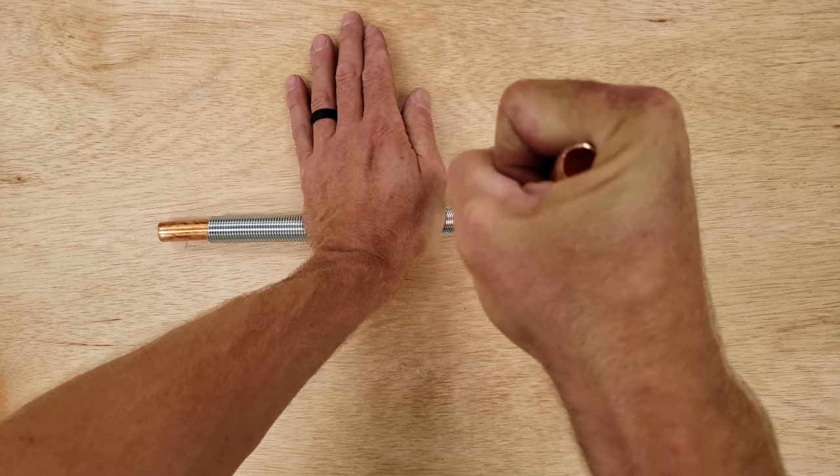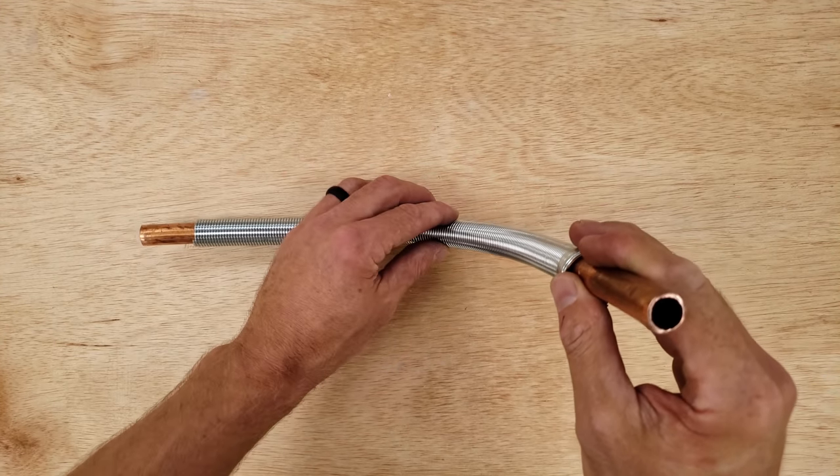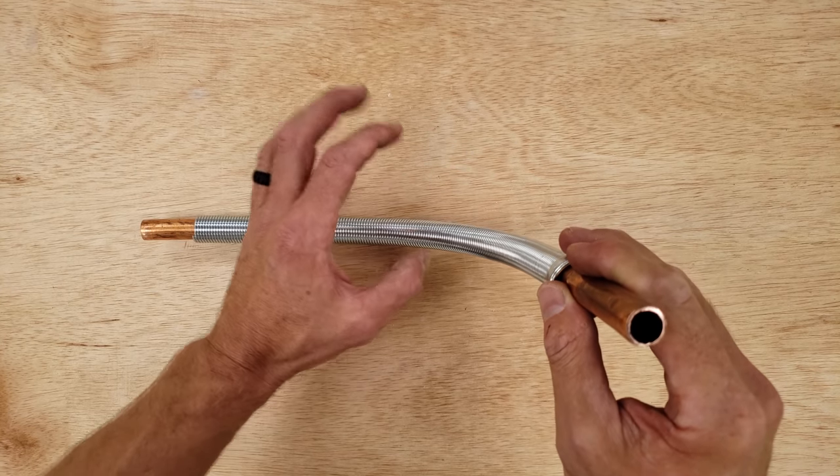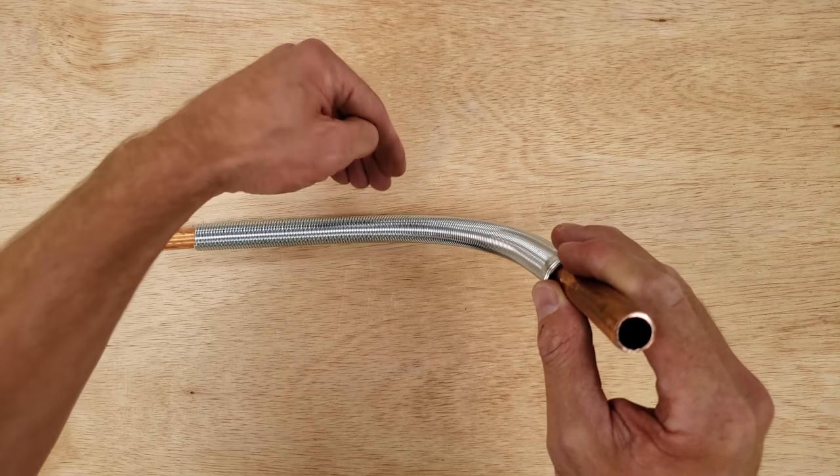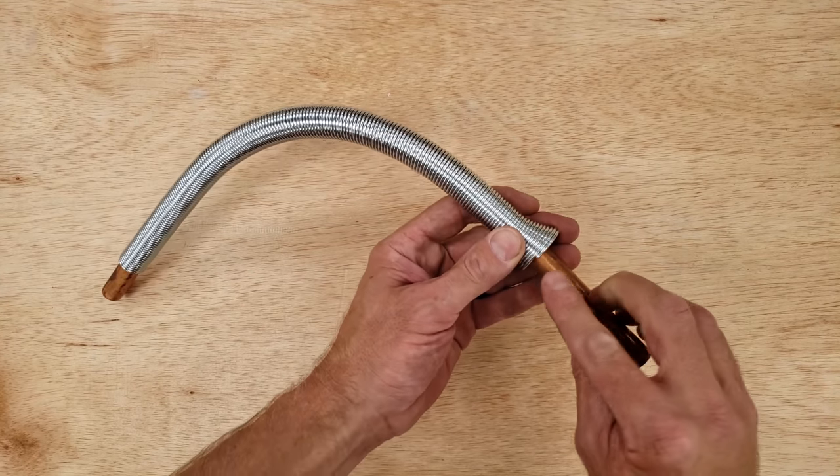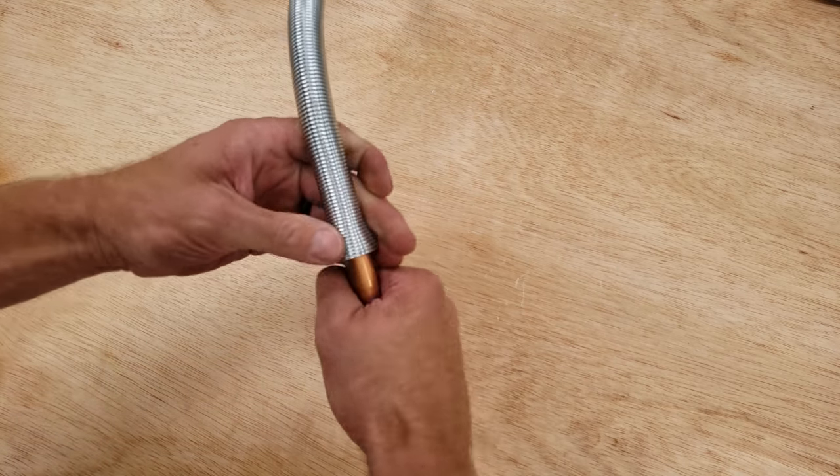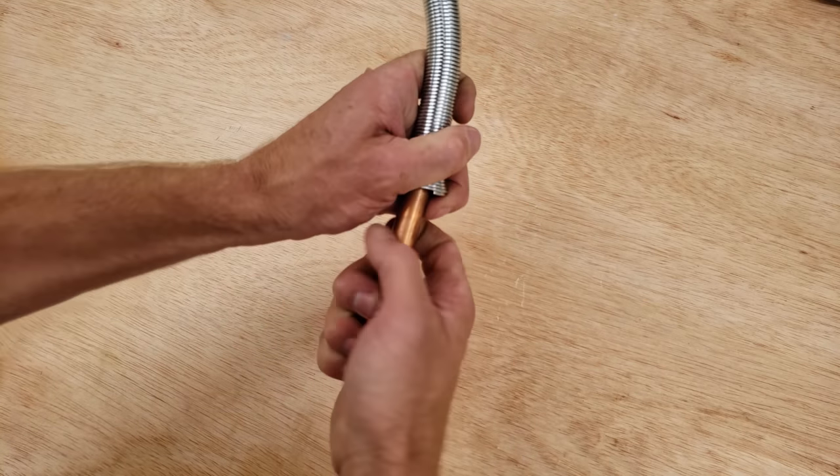The spring is applying force in order to help the copper tube not push outward, so it's applying force in all directions at the same time. In order to remove this, what you want to do is uncoil the spring, and so we're going to just turn it like this.